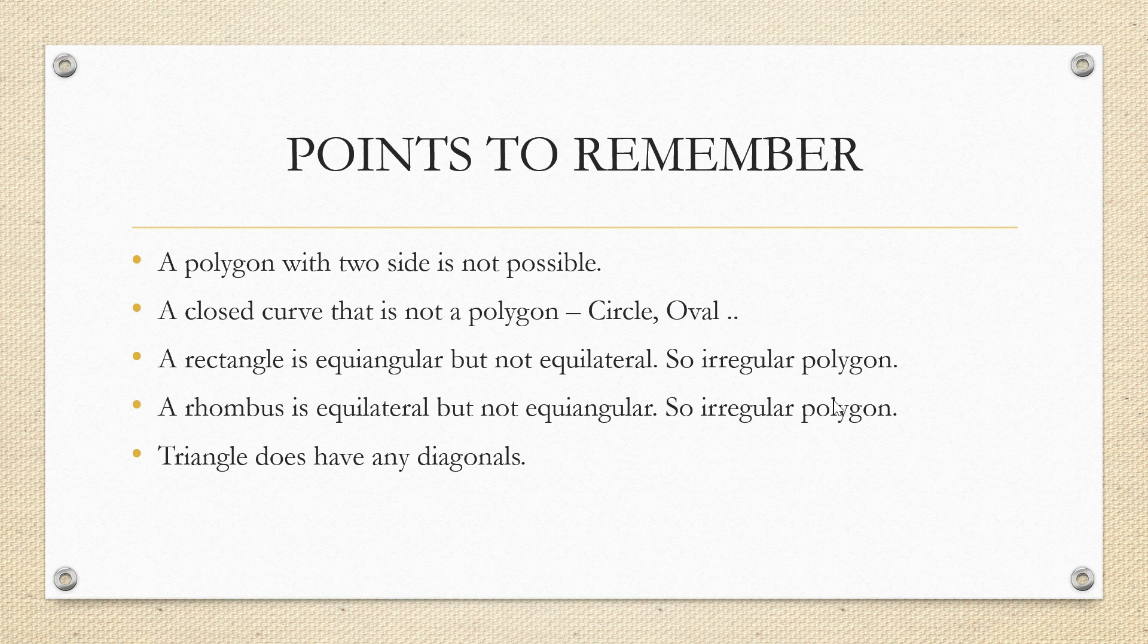A rectangle is equiangular. That is, all the angles are 90 in that, but it is not equilateral. So, it is not a regular polygon. We call it an irregular polygon.